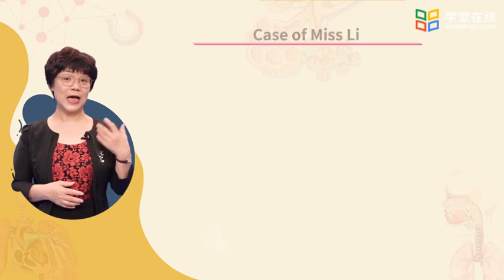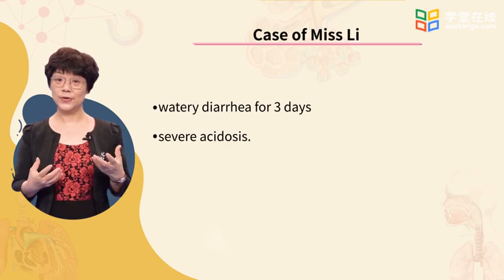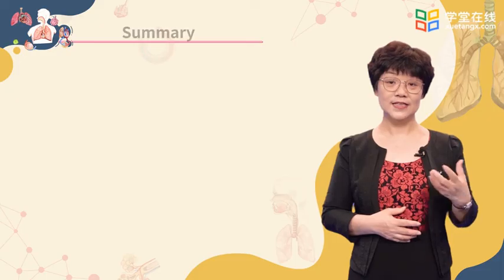Overall, tests like ABG and electrolytes are repeated frequently for timely management of metabolic disturbances. Now let's come back to the story of Ms. Li. She has metabolic acidosis. It is caused by the significant loss of bicarbonate ions due to prolonged watery diarrhea.